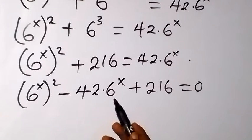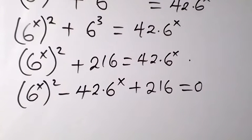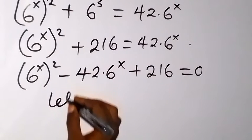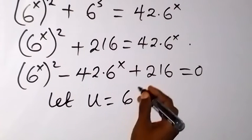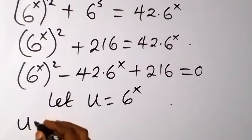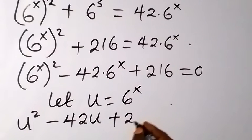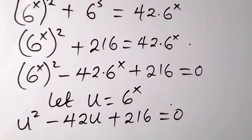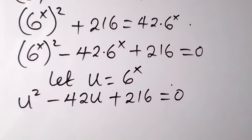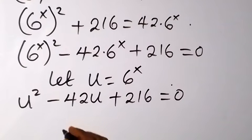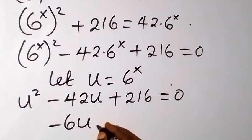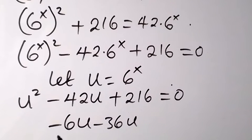We have 6 raised to the power x appearing in common, so let's substitute u equals 6 raised to the power x. The equation becomes u squared minus 42u plus 216 equals 0. We can solve this quadratic by factorizing. The term minus 42u can be split as minus 6u minus 36u, and multiplying gives plus 216.